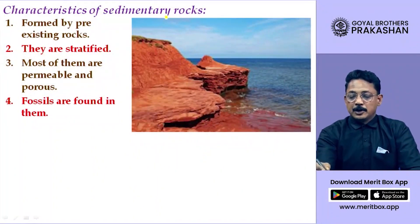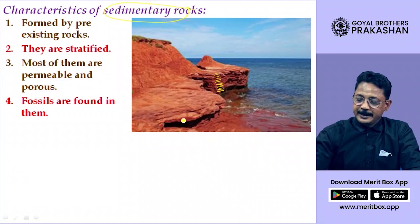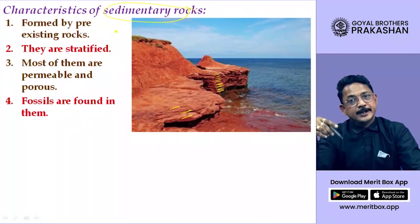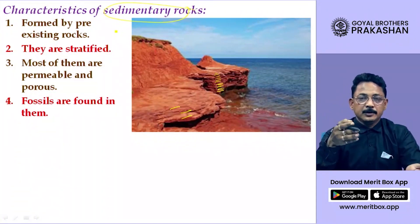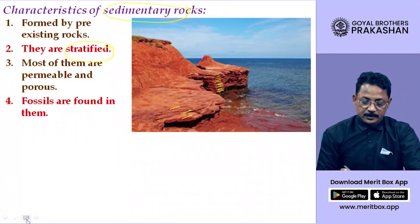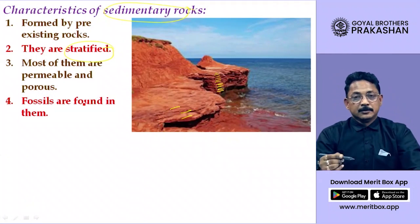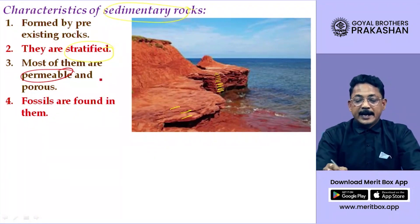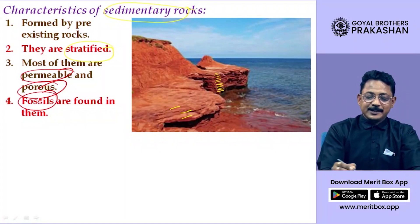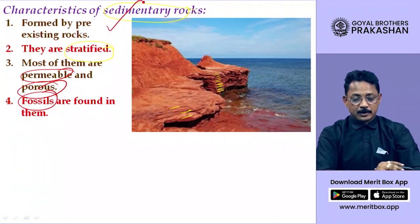General characteristics of sedimentary rocks: they are found in layers and are formed from pre-existing rocks — rocks which were already present got broken down and ultimately turned into a new rock called sedimentary rock. They are stratified, meaning formed in layers. These rocks are permeable and porous — water can percolate through them. Fossils are found in them. These are the very important characteristics of sedimentary rocks.